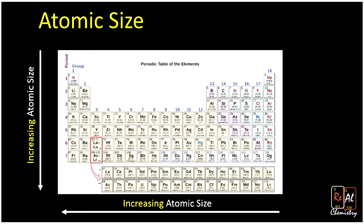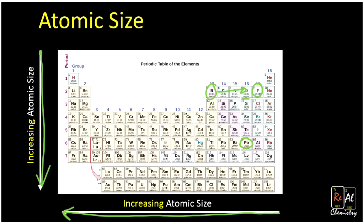There are two things to consider. First, atomic size increases as we go from top to bottom — so oxygen is smaller than polonium. This makes sense because as we go down the periodic table, we're adding more electrons into bigger and bigger orbitals. Atomic size also increases as we go from right to left, so fluorine is smaller than boron. This is because we're adding more protons to the nucleus, making its charge bigger, while electrons aren't getting any farther away — they're being sucked closer and closer.